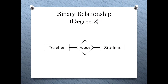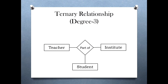First is binary relationship set, that is degree is equal to 2. Here in this example, the relationship set 'teaches' relates two entity sets — teacher and student. As two entity sets have participated in this relationship set, its degree is 2, and hence it is called a binary relationship set.